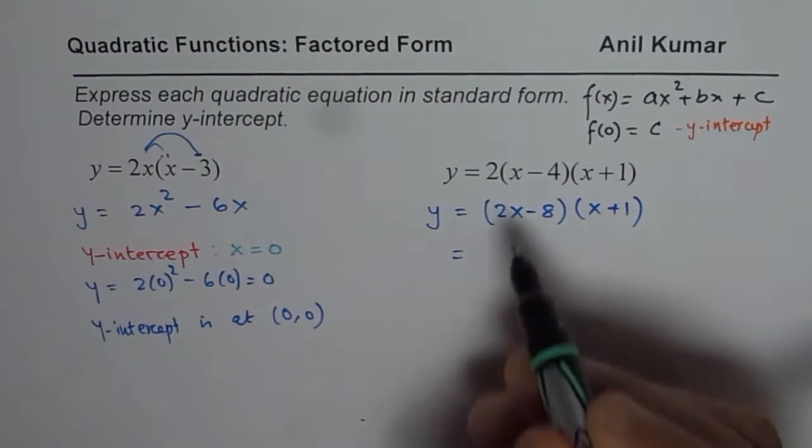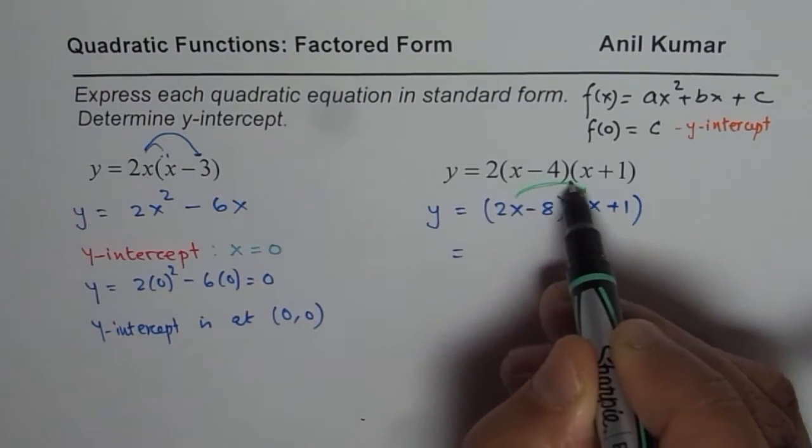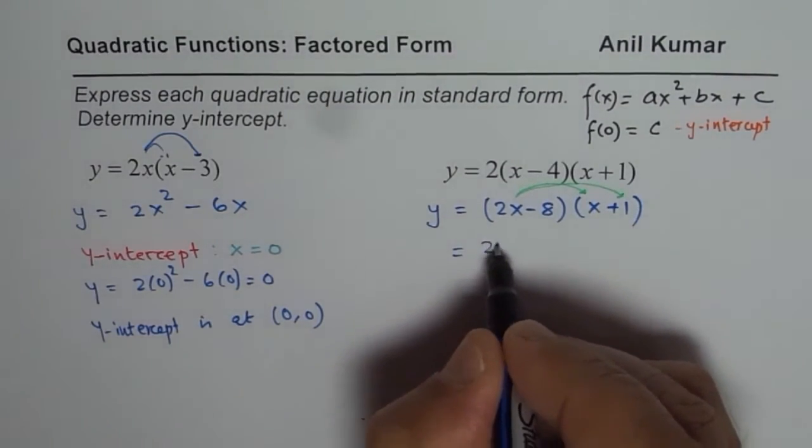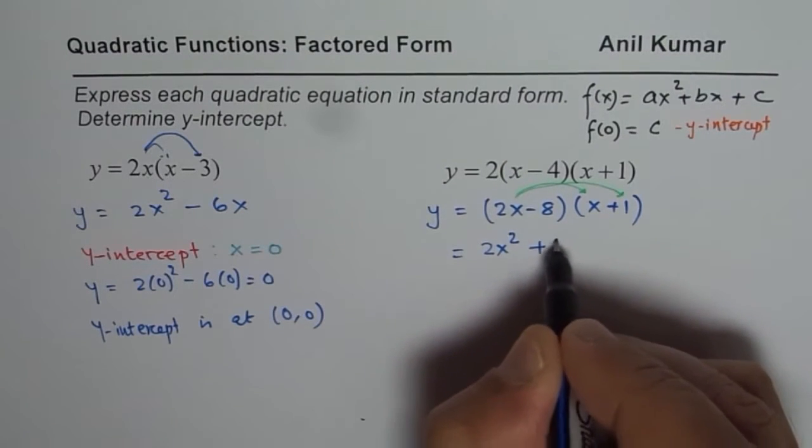So first I am multiplying the two terms with 2x. So 2x times x gives us 2x². 2x times plus 1 is plus 2x.